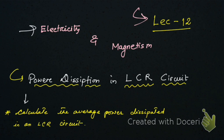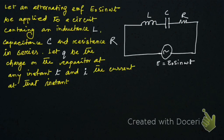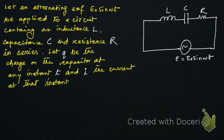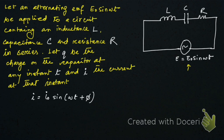Now let's start. Here you can see this is an LCR circuit. I have mentioned the terms I have considered. This is the alternating EMF source and the instantaneous current i is given by i₀ sine(ωt + φ). If you have already watched the previous lectures, you should know what φ is and what the terms mean.